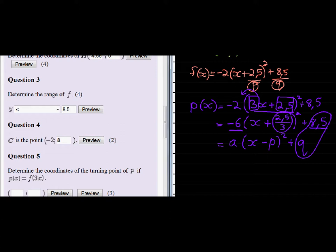My P was divided with a 3. So we're going to have to take 2.5 divided by 3. So Q is equal to 8.5. That stays the same. But the P value was divided with 3. So 2.5 divided by 3.